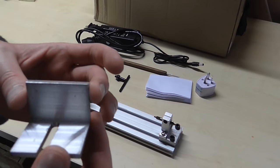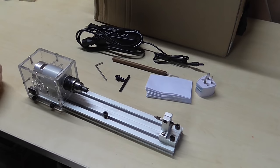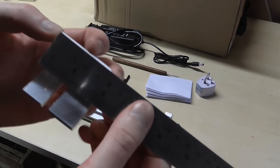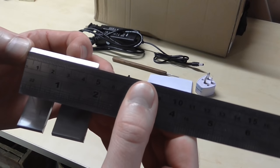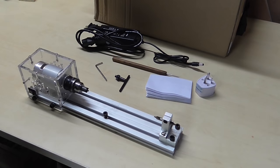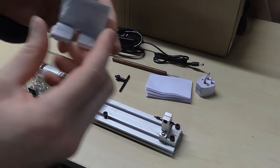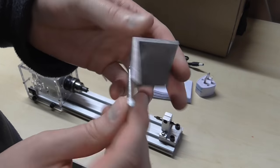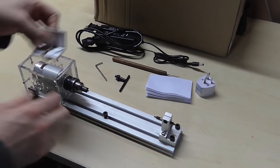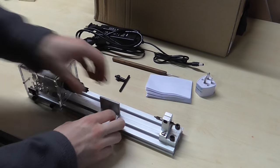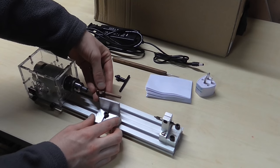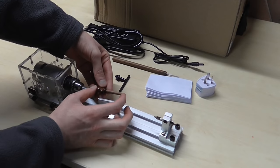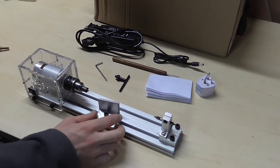The one issue with this is the tool rest is very short, let's see, 45mm, but obviously that's just a bit of aluminum angle. You could quite easily make a wider one which I'll probably do because even for this tuning peg, if I'm turning the whole length it's too short.